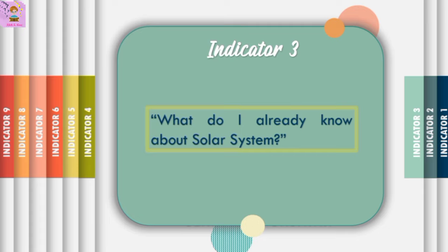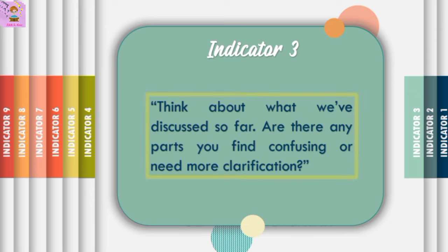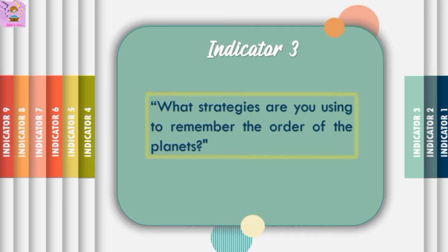For example, in a science class at the beginning of the lesson, we can ask students to think about what they already know about the solar system and what they want to learn — encouraging metacognition by reflecting on existing knowledge and setting learning goals. During the lesson, periodically pause and ask, 'Pause for a moment and think about what we've discussed so far — are there any parts you find confusing or need more clarification?' This prompts students to monitor their comprehension and identify areas where they need help, and asking 'What strategies are you using to remember the order of the planets?' promotes thinking about their thinking processes.